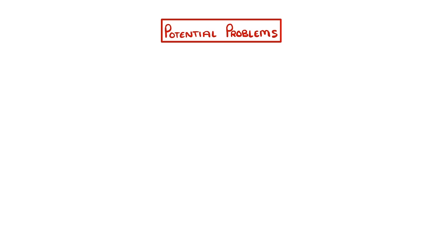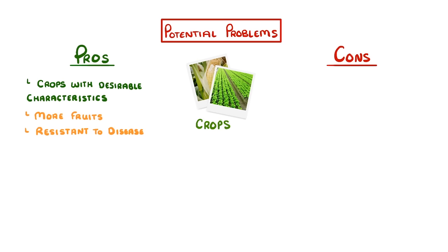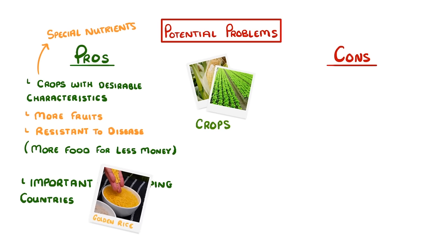As with everything in science, there are some potential problems with genetic engineering. So let's take a quick look at the pros and cons of genetically modified crops. The pros are that we can easily make crops have desirable characteristics, like more edible fruit or being resistant to disease, which means we can make more food for less money. This is particularly important when it comes to developing countries, as people still die from starvation. We can also make sure that plants produce special nutrients — for example, Golden Rice contains beta-carotene, which can protect people from going blind.